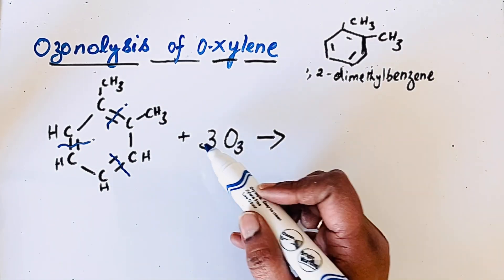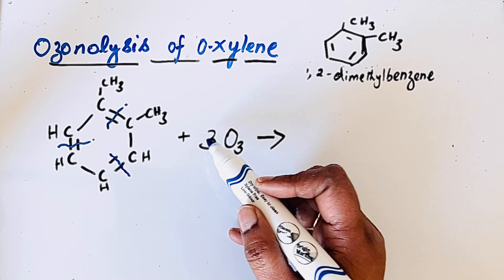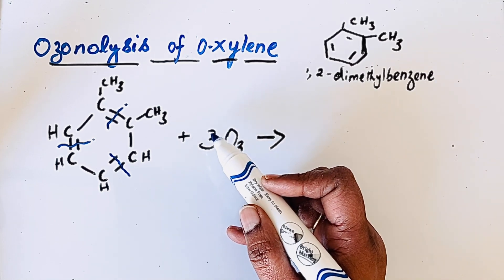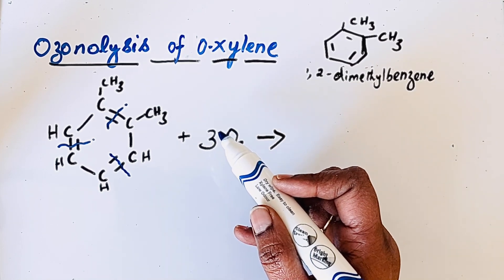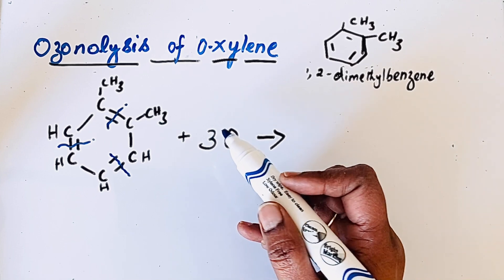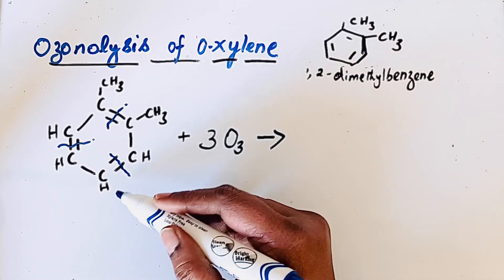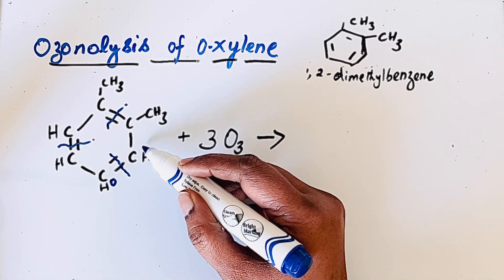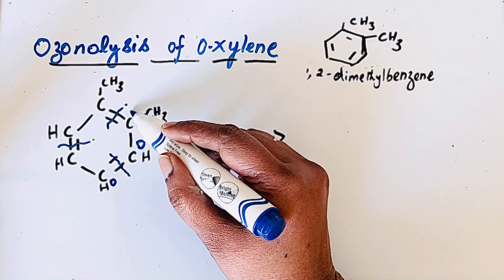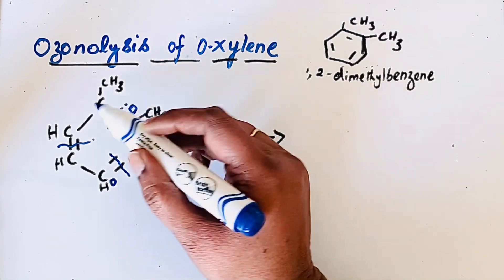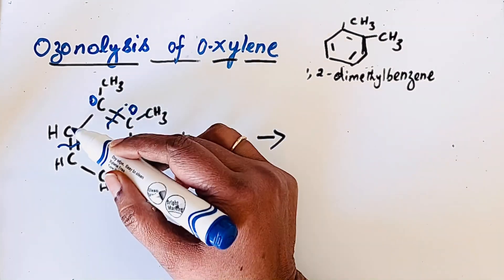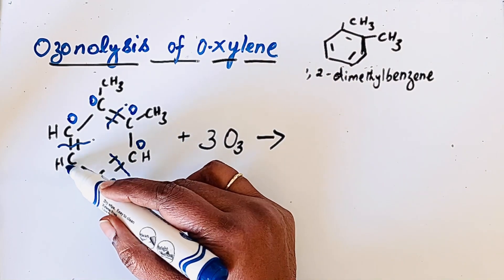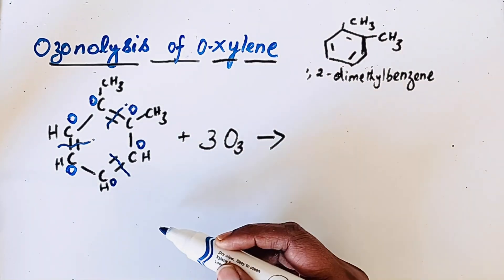One oxygen atom is taken by zinc, which is used as a reductive ozonolysis agent. The remaining two oxygen atoms are each added to the carbons at the cleavage site — one oxygen here, one oxygen here, and one oxygen here, and also one oxygen added here.